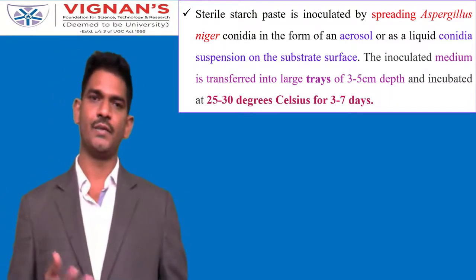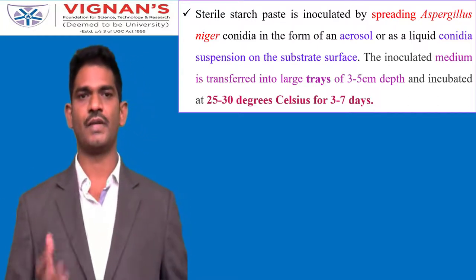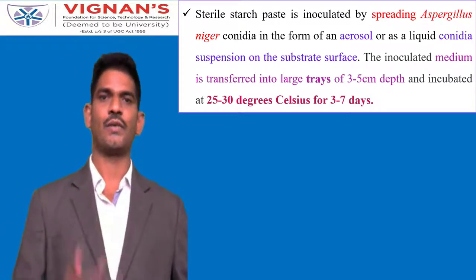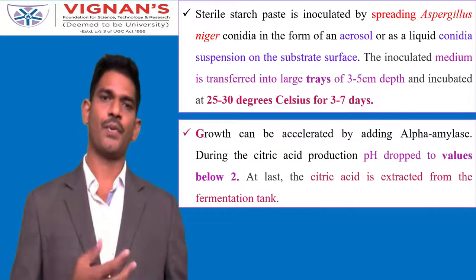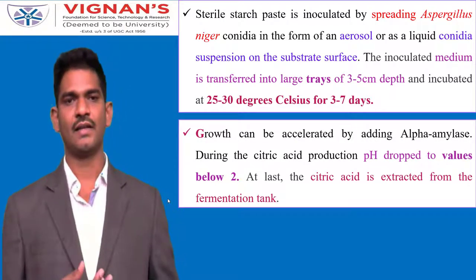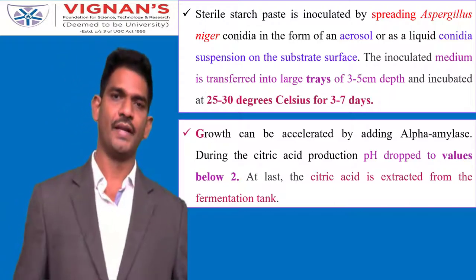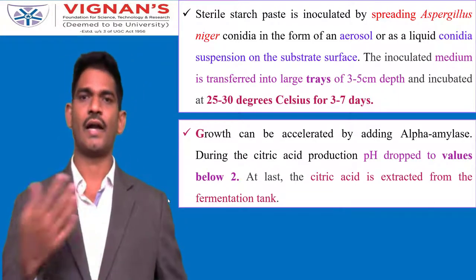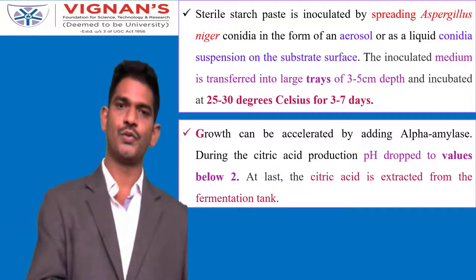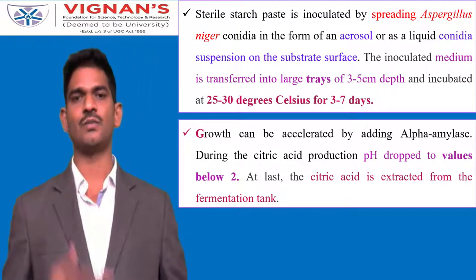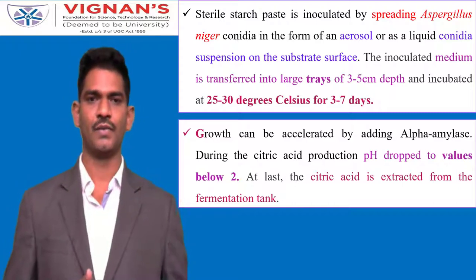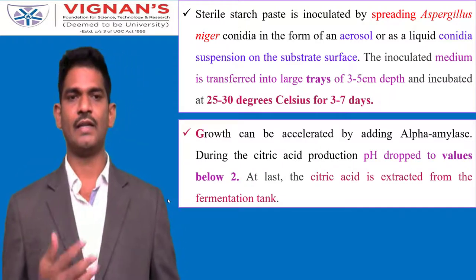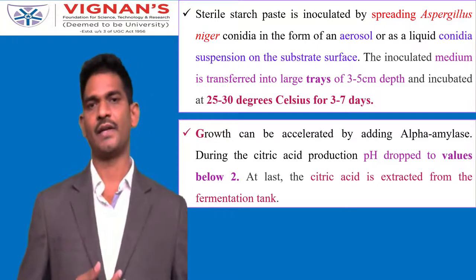The inoculated medium is transferred into large trays of 3 to 5 cm depth and incubated at 25 to 30 degrees Celsius for 3 to 7 days. During the process, growth of Aspergillus niger is accelerated by adding alpha-amylase, which hydrolyses complex carbohydrates into simple sugars, accelerating citric acid biosynthesis. During production, the pH drops below 2, and at last the released citric acid is extracted from the fermentation tank.